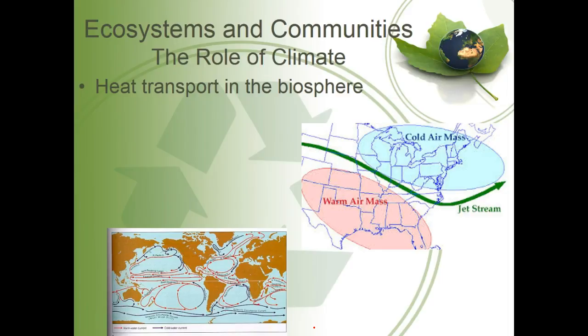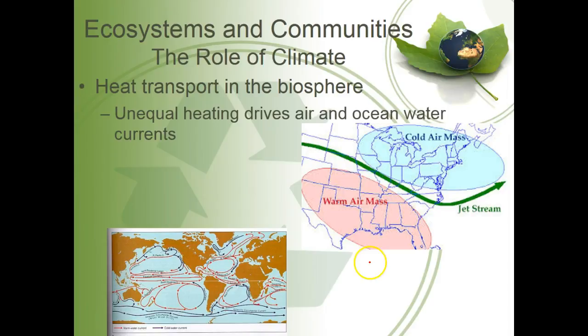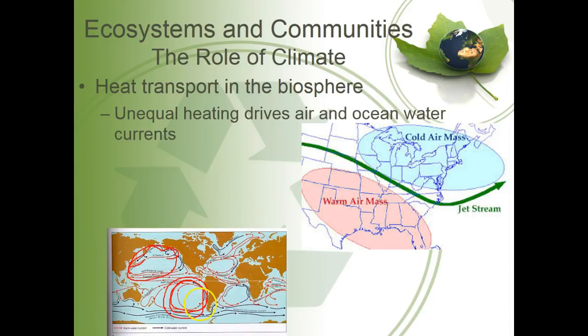Heat brings about jet streams, wind currents, and ocean currents. In this picture you can see ocean currents — all of the red arrows are warm water currents and all of the blue arrows are cold water currents. A lot of times they go from red to blue. A current will go right up the west coast of Japan, travel up to Alaska and cool off at that northern latitude, then come back down and heat up. This cycling of warm to cold drives not only the water currents but also the wind currents. You'll notice big main jet streams that form at the boundary between warm and cold air masses.